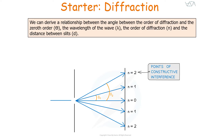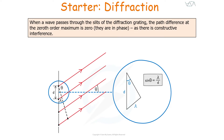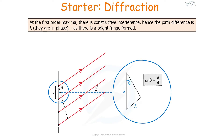We can derive a relationship between the angle theta — between the order of diffraction and the zeroth order — the wavelength lambda, the order of diffraction N, and the distance between the slits D. When a wave passes through the slits of a diffraction grating, the path difference at the zeroth order maximum is zero — they are in phase, so there is constructive interference. At the first order maxima, there is also constructive interference, so the path difference between the two waves is lambda, one whole wavelength.